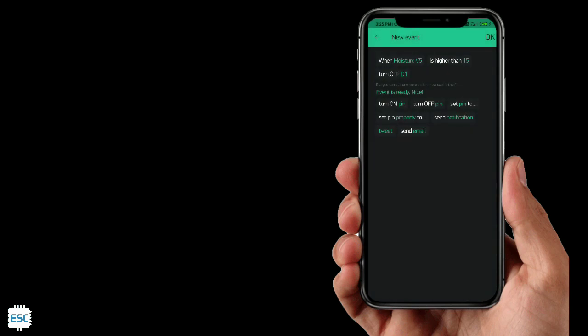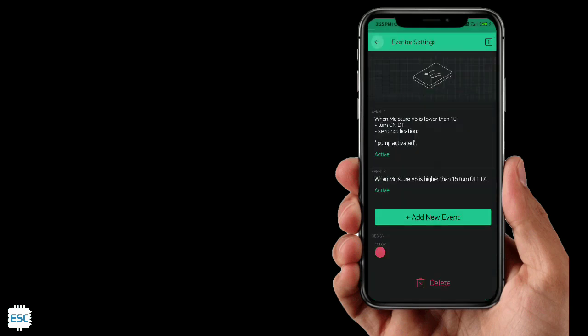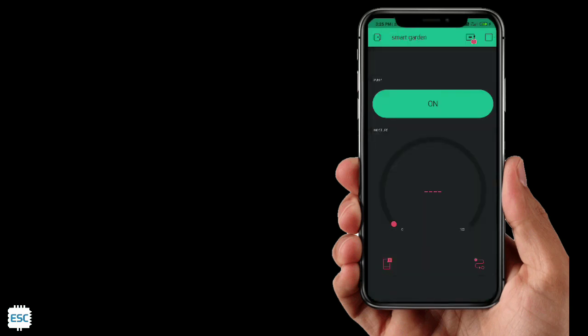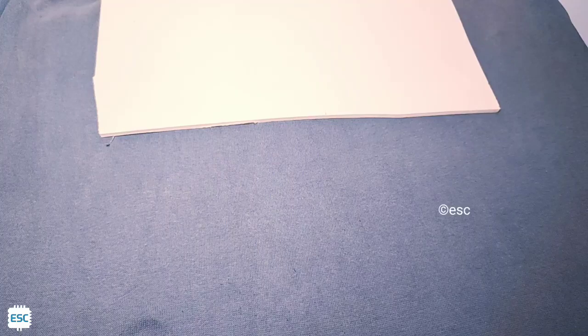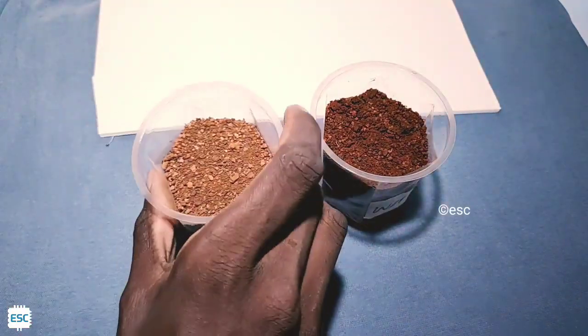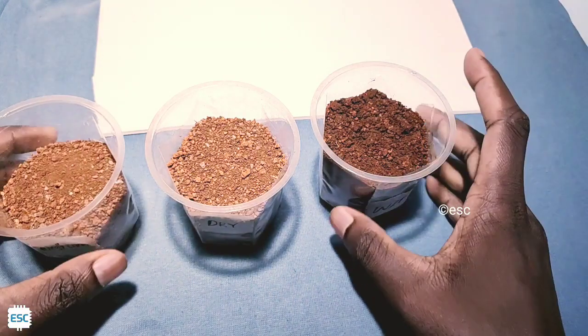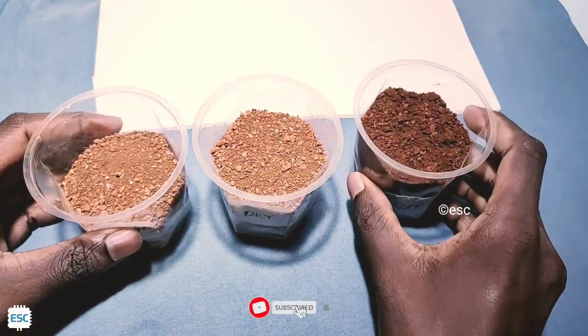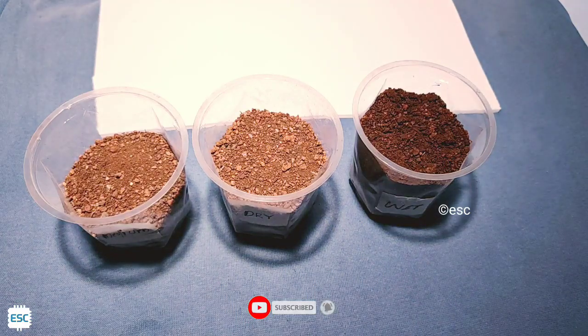That means whenever moisture goes below 10, the pump will automatically turn on and the app will send notification. And also whenever the moisture goes higher than 15, the motor will turn off. For this circuit I have three glasses of soil here. To change the moisture content I added water to it.